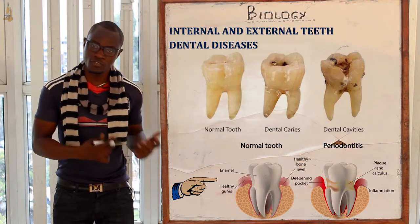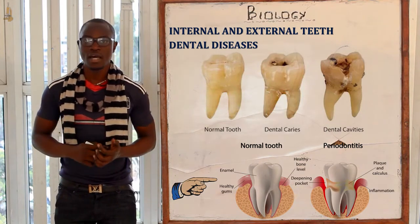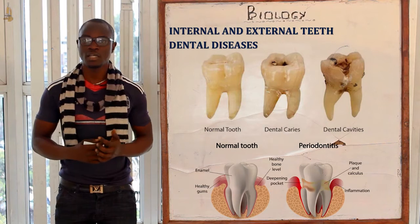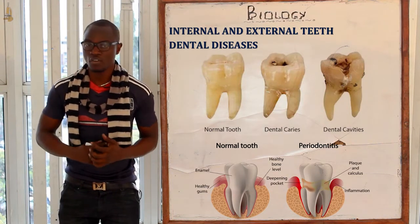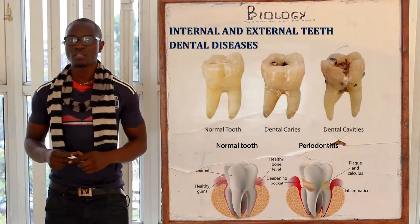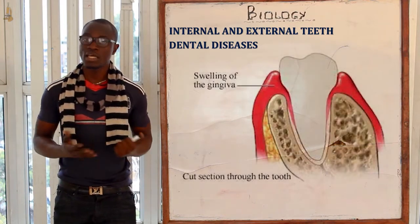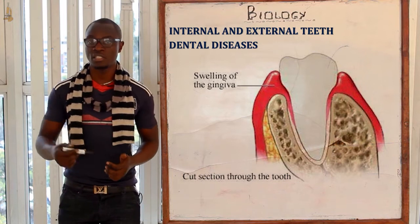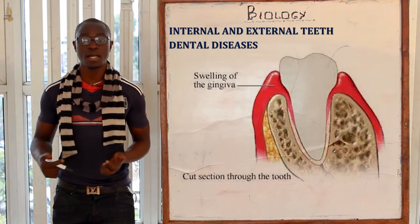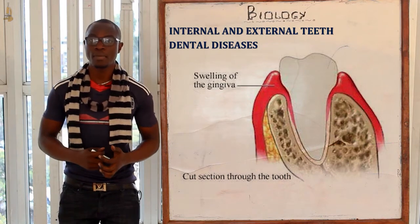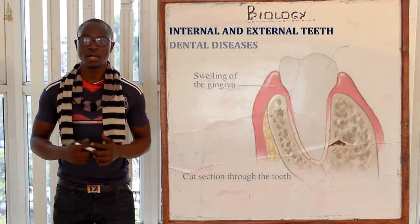In pyorrhea, the connective tissues responsible for connecting the teeth become infected, and their strength in holding the teeth declines, thereby leading to tooth loss. Another opportunistic disease is gingivitis, which is the inflammation of the gums. The gums may become red, swell, bleed, and pus may ooze out of the gums.